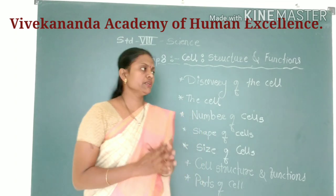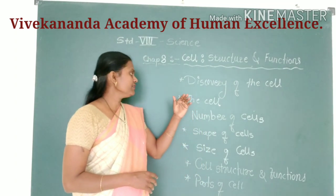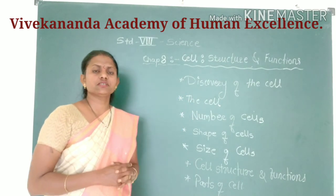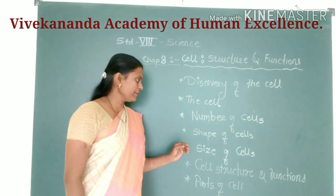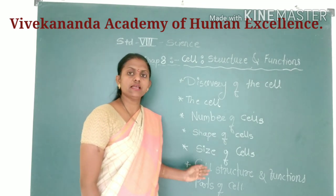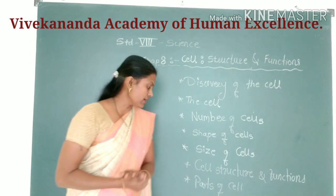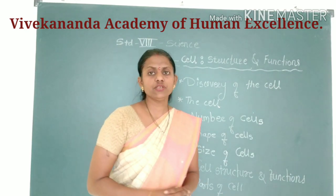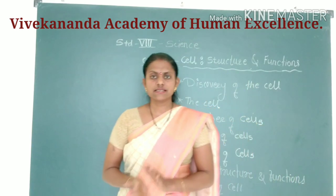In this chapter, we are going to see the discovery of the cell, then the cell's exact structure and its function, the number of cells, shape of cells, size of cells, cell structure and function, and the most important part — the parts of the cell. We will also compare the plant cell and the animal cell.